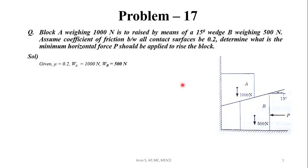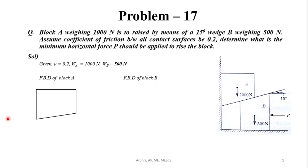We will be drawing the free body diagram of both block A and block B separately, and applying the equilibrium equations to find the solution. The weight W will be acting vertically downwards at the center of gravity of block A.